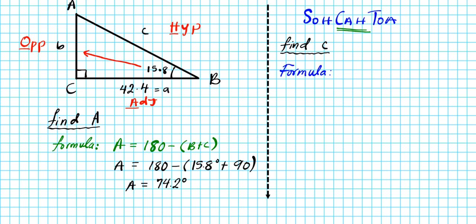So how are we going to set it up? We're going to use CAH. CAH tells us that cosine theta is equal to adjacent divided by hypotenuse. So this is the formula that will help us to solve for side c. So we're going to set it up: cosine of the angle, the angle under consideration is big B. So cosine of big B, which is 15.8, is equal to the adjacent which is 42.4 divided by the hypotenuse which is little c.